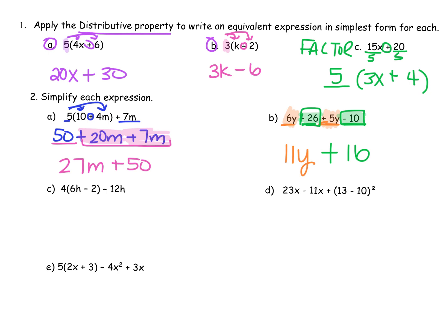C, distribute first. 4 times 6 is 24, don't forget the H. Minus 4 times 2 is 8, and then recopy that says minus 12 H. Now put alike things together. I have an H and I have an H. When I look at the signs I have a 24 and then it says to take away 12. 24 minus 12, I'm left with 12 H's. Copy the rest, minus 8.